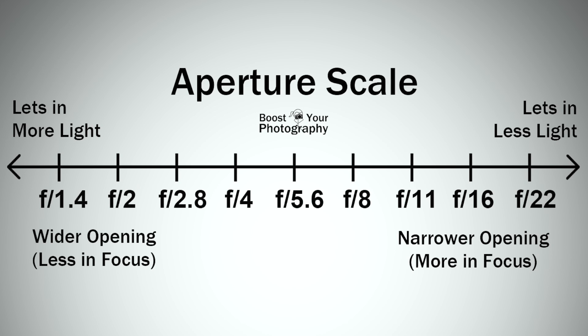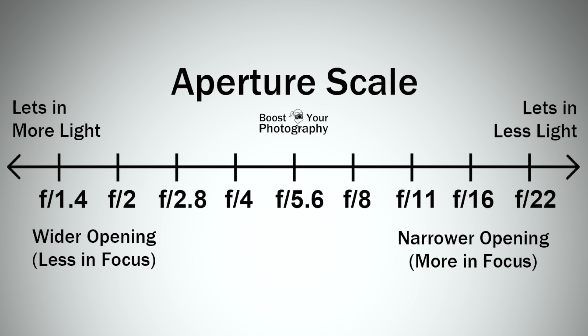Now that you get a glimpse of the f-stop scale, it helps you define your contrast ratio. Contrast ratio is pretty much having your key light and your fill light to define how you want your image to look. For example, if you want to shoot at a 1 to 2 ratio, your key light will be at an f4, and on the f-stop scale, your 1 to 2 ratio would be f2.8.